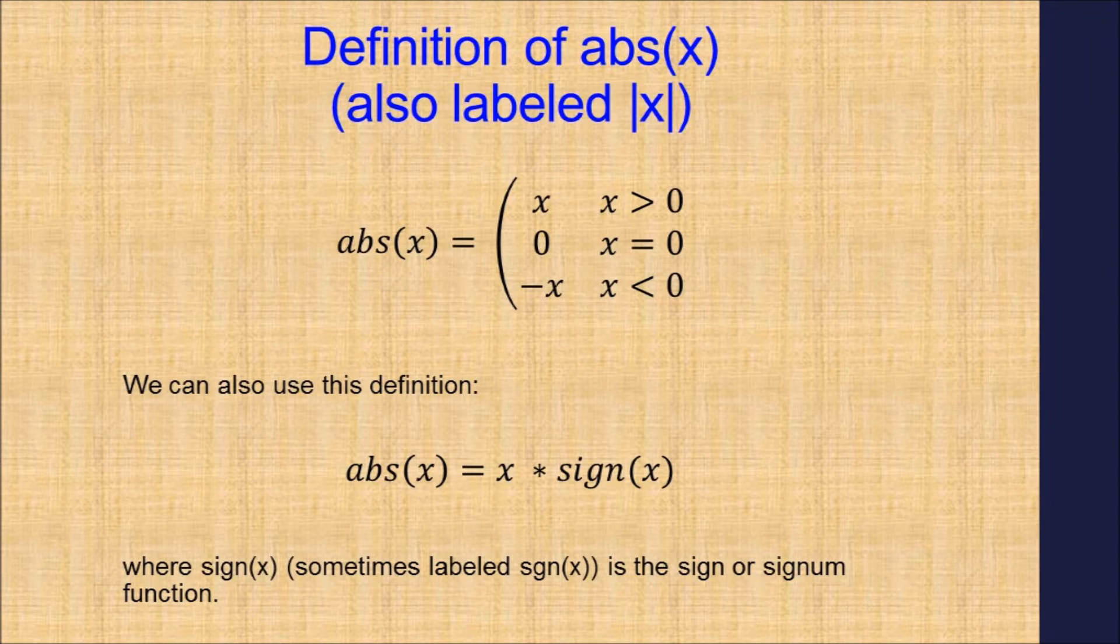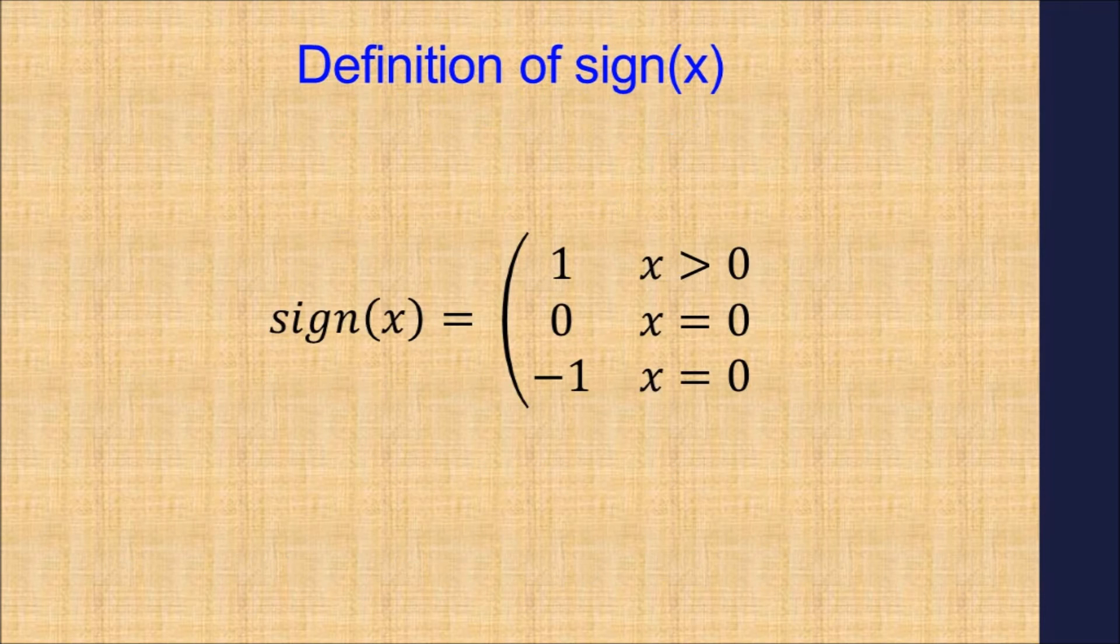We can also define the absolute value of x by the product of x and the signum of x. The signum of x is defined like this: 1 when x is positive, 0 when x equals 0, and negative 1 when x is negative.